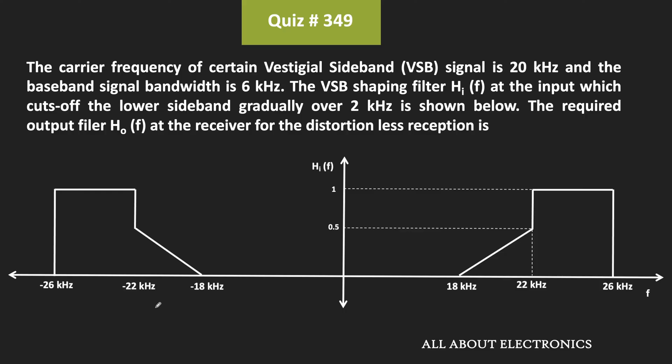Hey friends, welcome to the YouTube channel all about electronics. In this question, we have been given that the carrier frequency for a certain VSB signal is equal to 20 kHz. We have also been given that the bandwidth of the baseband signal is equal to 6 kHz.